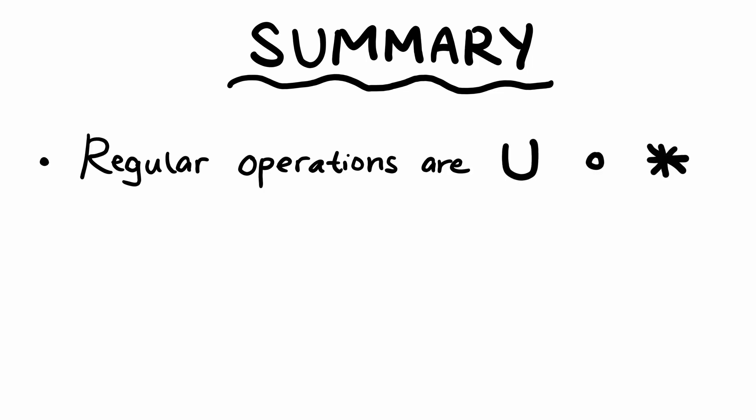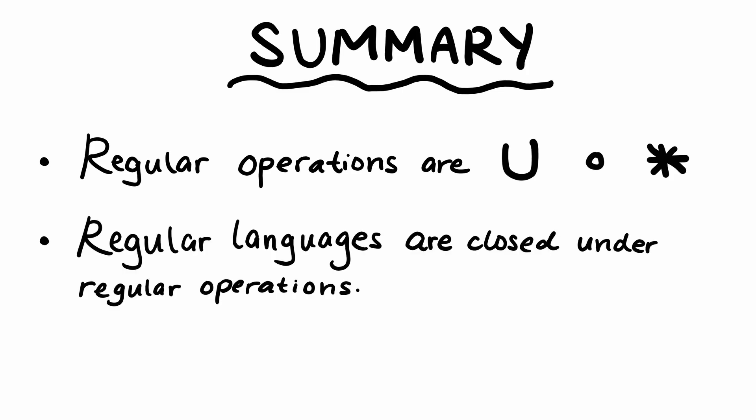To summarize everything in the video, the regular operations are the union, concatenation, and star operations on languages. Regular languages are closed under the regular operations. And finally, we can prove this by constructing new machines that recognize the resulting languages.